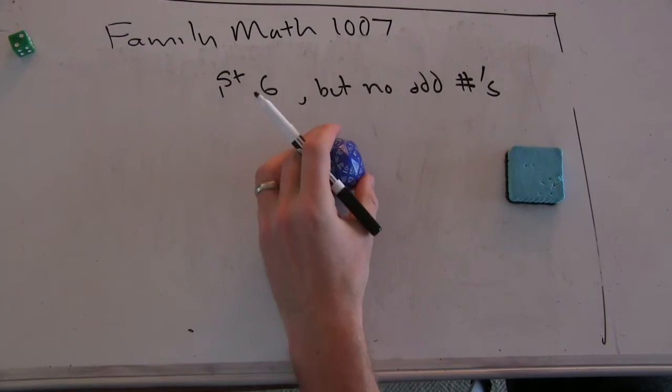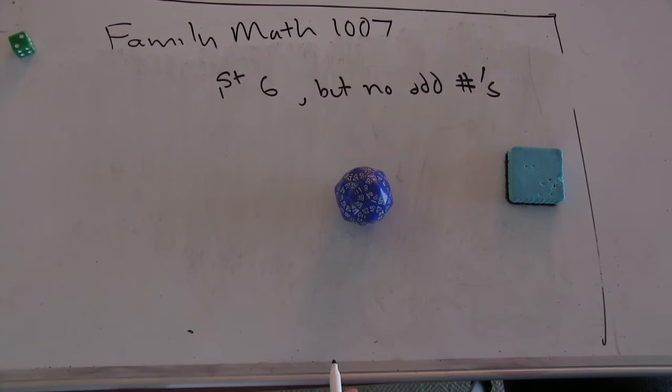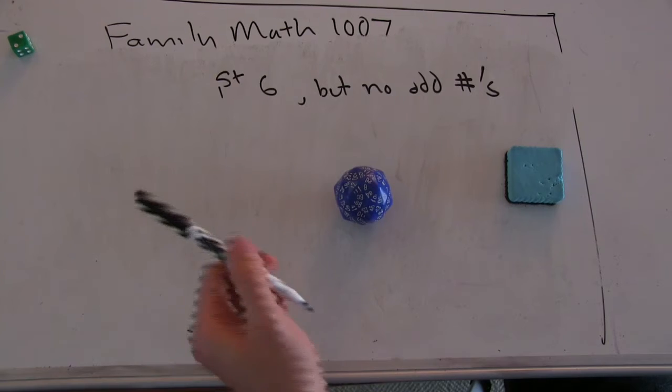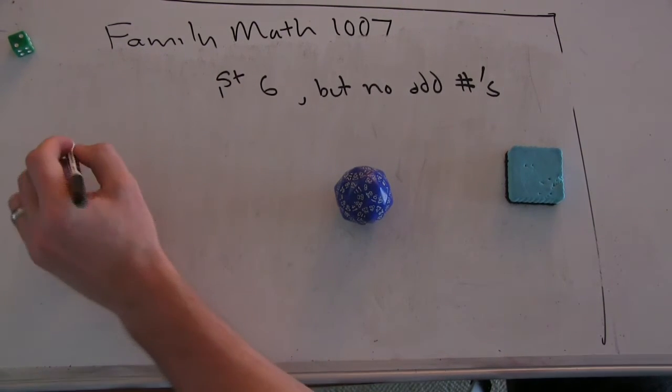Okay. So then we have, what, 61 out of 120 that reset the state. Do you see what? Because you have 60 odd and 60 even. Yeah. And then one's a six.